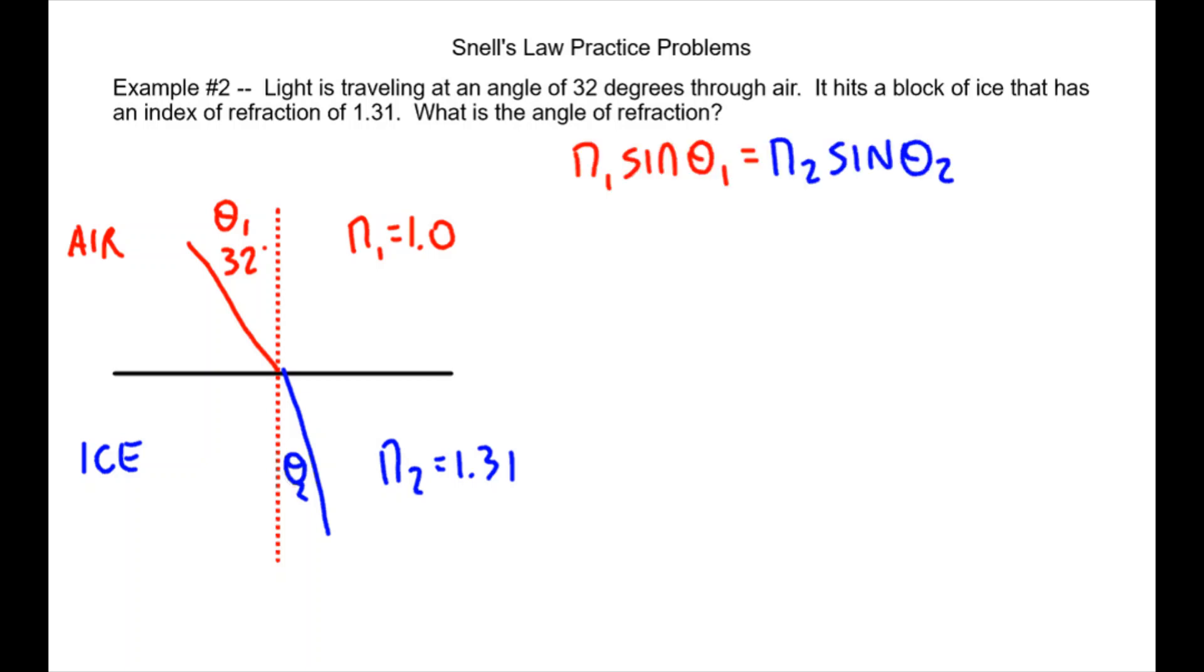Snell's law is this. We'll start filling in what we know for the top medium which is air 1.0 times θ1 which is 32. Then the bottom medium, ice 1.31 goes in for n2, and then we're going to leave this as θ2.